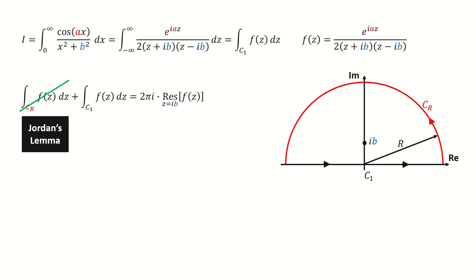So we only need to compute the residue on ib, then we are done. Because ib is a simple pole, the residue equals to this limit. And then we plug in f(z). And these two terms cancel out. After we replace z with ib, then we got here. And then we plug it back to our equation.